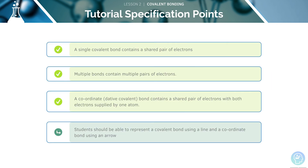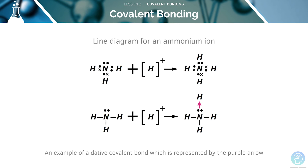Now let's look at our final specification point, covering the representation of covalent bonds. Here we can see the line diagram for an ammonium ion. It's important that the head of the arrow touches the atom receiving the donated electron. It's also important that this arrow points away from the donor atom. The donated pair of electrons are represented by two dots, shown here.